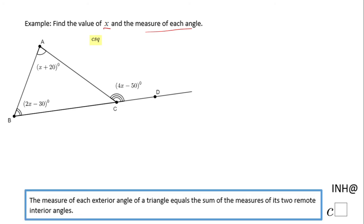For that reason we're going to use the exterior angle theorem, which says the measure of each exterior angle of a triangle, in our case the measure of angle ACD, is equal to the sum of the measures of its two remote interior angles. In our case, that's the measure of angle A plus the measure of angle B.